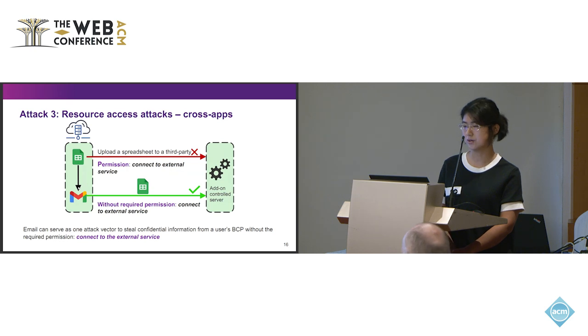And for the second type of vulnerability, we will call it the Access Control attack. It can be divided into two types. The first is the cross application. If the third party IDAM want to upload sensitive information like upload a spreadsheet into the third party, it must gain our permission beforehand, which is connect to external service.